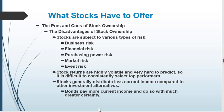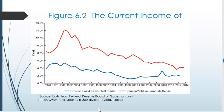Bonds pay more current income. The challenge with bonds though is they really don't have that much in total return. The coupon yield on corporate bonds is higher than the dividend yield on S&P 500 stocks. But when we add the capital gains per year, we end up far above the return from corporate bonds.